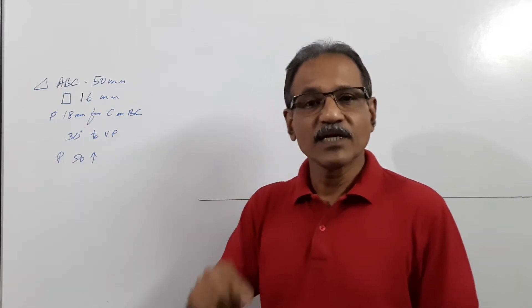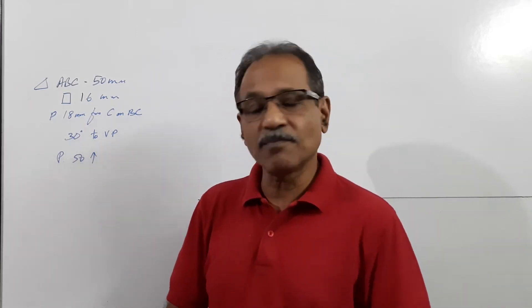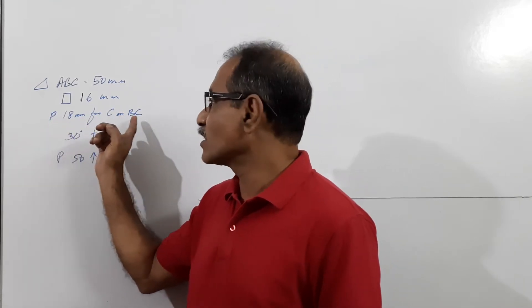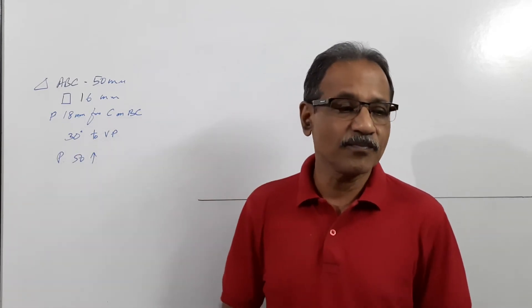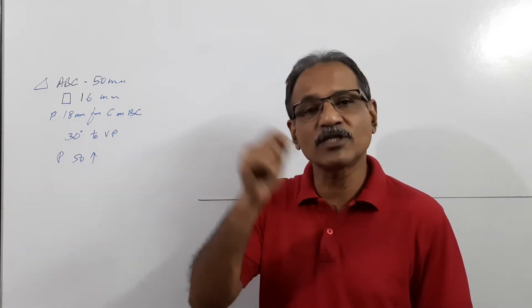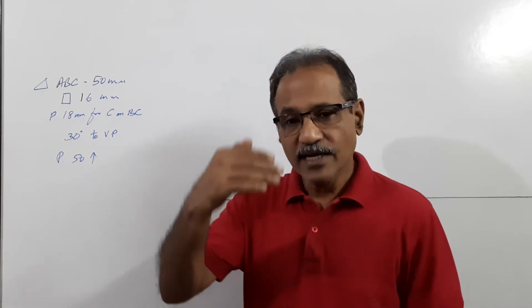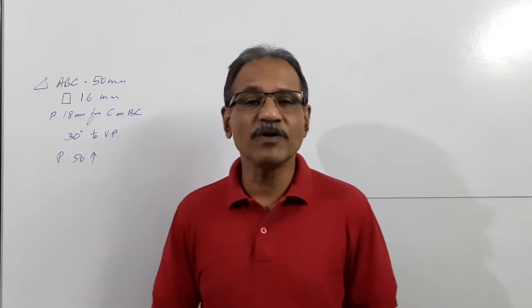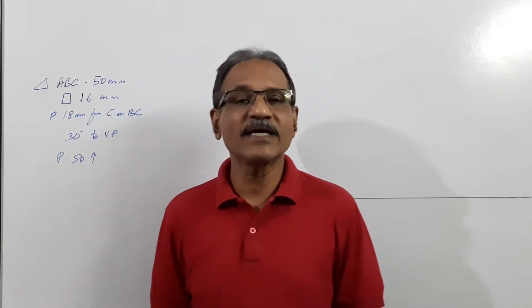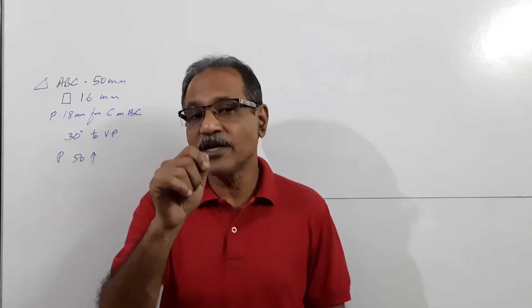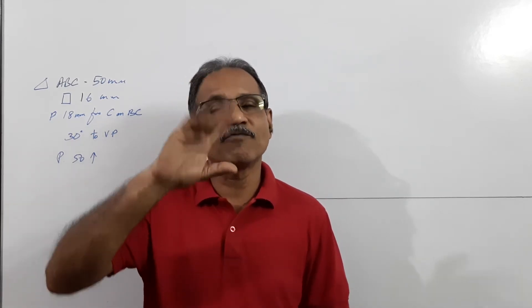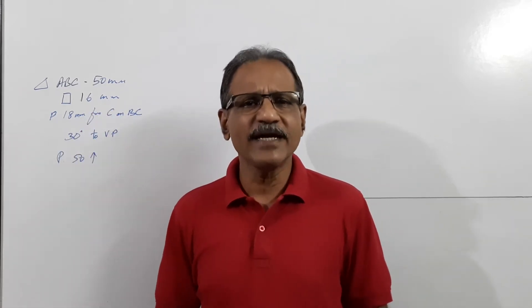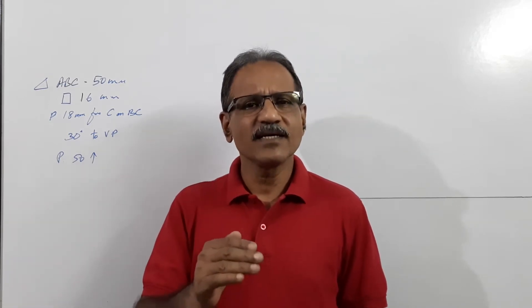This triangle is suspended on a point P on the side BC, which is 18 mm from C. The lamina is suspended on P. The surface of the lamina makes 30 degrees to VP. The point P where it is suspended is 50 mm above HP. It looks like a confusing question when you read — not very easy. Let's do it.